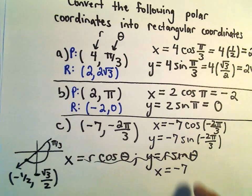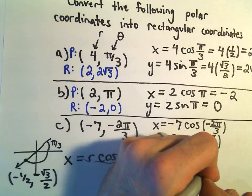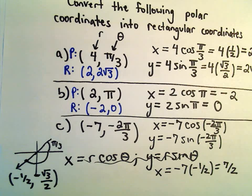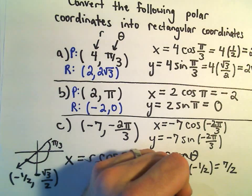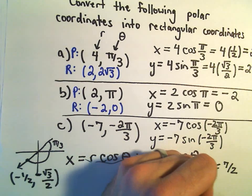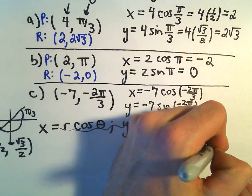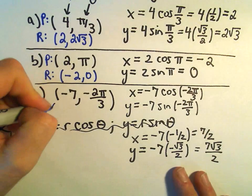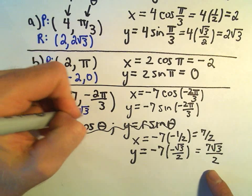So x will be negative 7 times cosine of negative 2 pi over 3. Negative 2 pi over 3 gives cosine of negative 1 half, so that will give us positive 7 over 2 for the x-coordinate. For the y-coordinate, we'll get negative 7 times sine of negative 2 pi over 3. Sine of negative 2 pi over 3 is negative root 3 over 2, so we would get positive 7 root 3 over 2. In rectangular coordinates, the point is (7/2, 7√3/2).